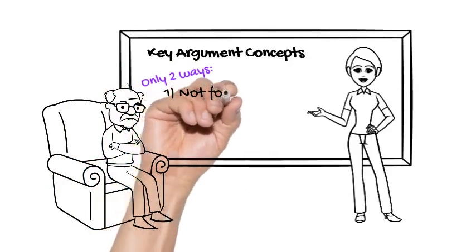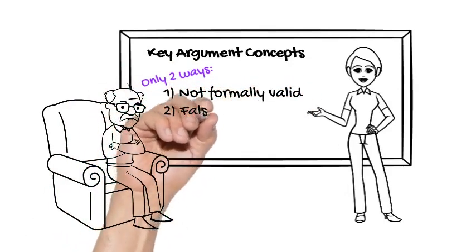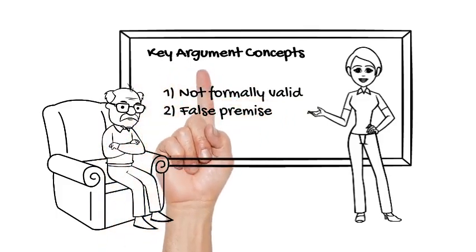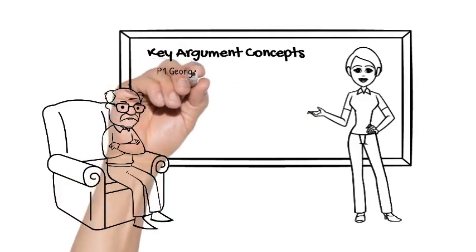This shows that there are only two ways to criticize an argument as not meeting the gold standard of soundness, by showing that it's not formally valid, or that it has at least one false premise. Let's apply that to the case of our argument.